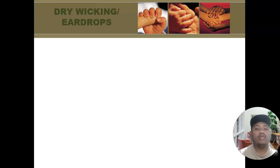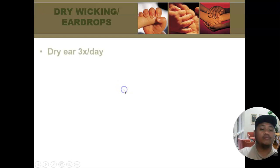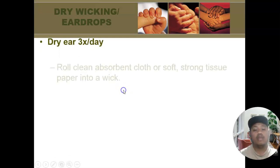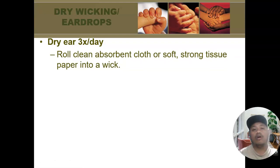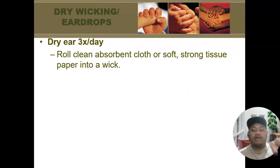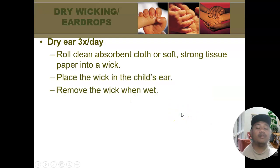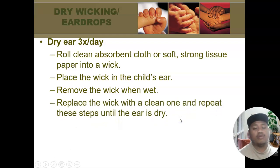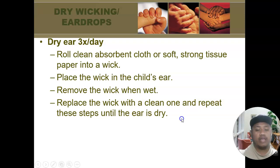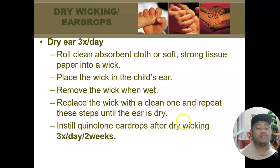Now, how do we perform dry wicking? Dry wicking is done 3 times a day. Roll a clean absorbent cloth or soft tissue paper into a wick — make it narrow enough to fit in the ear. Place the wick in the child's ear, remove it when it becomes wet, replace it with a new one, and keep repeating until the wick comes out dry. Dry wicking is done for both acute and chronic ear infection.